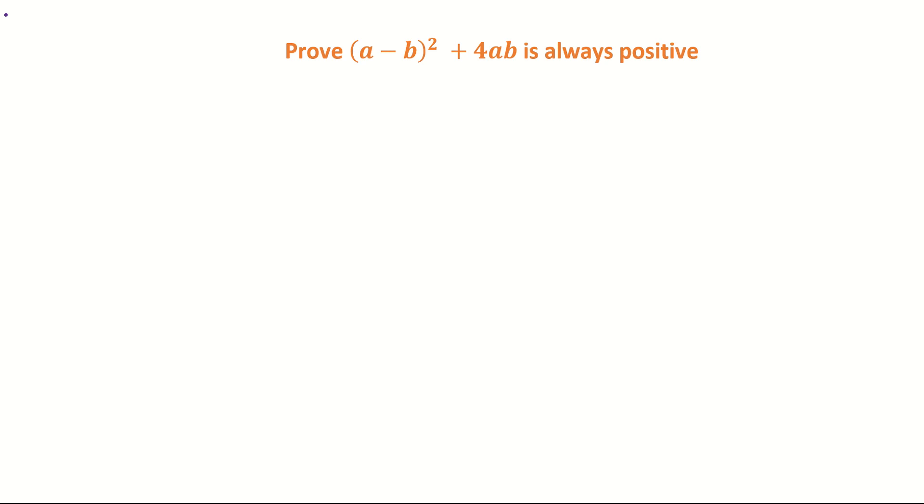In this video we are going to prove that (a - b)² + 4ab is always positive. Just make sure you understand that (a - b)² means you're multiplying it by itself, so something squared means we're multiplying by itself. So it's (a - b) times (a - b) plus the 4ab.